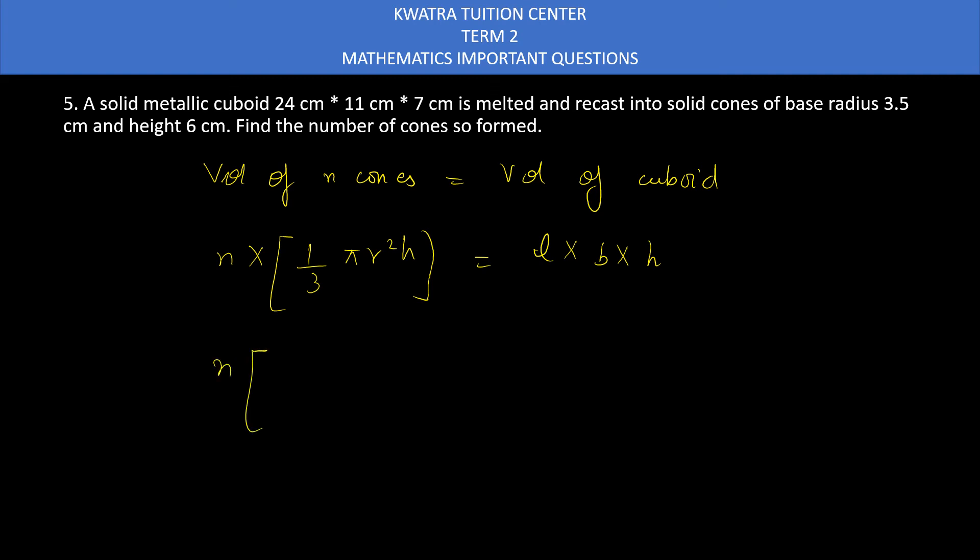Let's put the formula. n times 1 by 3 pi r square h, and on right side volume of cuboid is L into B into H. We have to find n. 1 by 3 as it is, pi is 22 by 7, r square is 3.5 into 3.5, h is 6. L into B into H: 24, 11 into 7. Cancel some values. Take all terms to right side. 7 into 3 is 21, divided by 22, 3.5, 3.5, and 6.